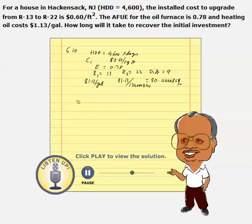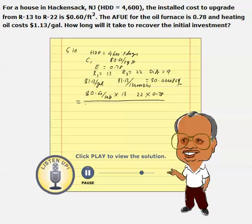So we can use the formula now. It consists of CI, the cost of insulation, which is $0.60 per square foot, times R1 which is 13 — units are ft² °F·hr/BTU — and R2 is 22, times the efficiency which is 0.78, divided by the cost of energy which is $0.0000869 per BTU.